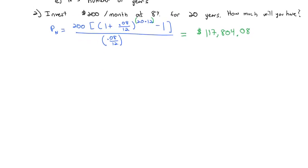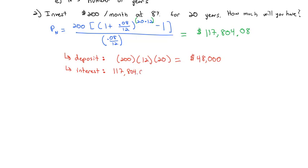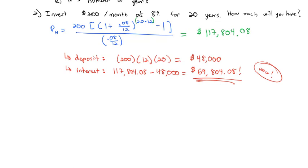At $200 per month at 8%, you'll find out after 20 years you've got $117,804.08. What makes this final amount particularly interesting is if we think about the amount we deposited: we put $200 a month times 12 months times 20 years. If I multiply that out, that means I put in $48,000. But when it comes time to take the money out, I have $117,000. We could think about that difference as the interest we've earned.